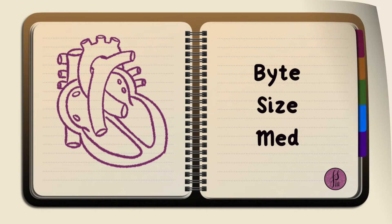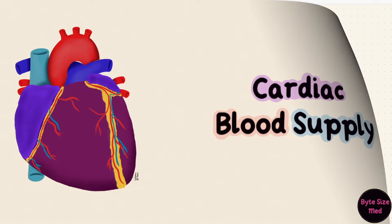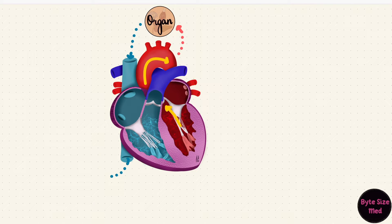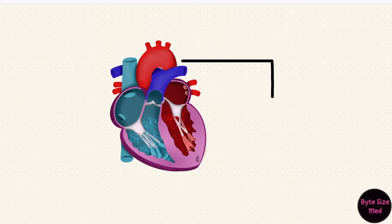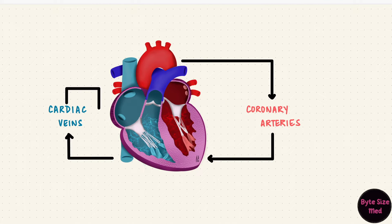Hello, welcome to Bite Size Med. This video is on the blood supply of the heart. The heart pumps arterial blood to every part of the body and receives venous blood from all of them. But the heart tissue itself obviously needs blood, and it gets that through coronary vessels. The coronary arteries carry oxygenated blood to supply the heart, and after exchange the cardiac veins carry the deoxygenated blood back to the right atrium.